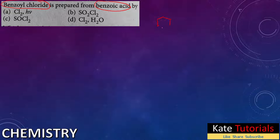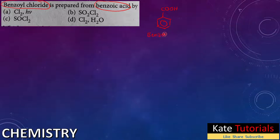This is a six-membered cyclic ring called cyclohexane. If I put a circle in it, it means resonating pi bonds are there — six pi electrons — so it becomes benzene. Now, to this benzene if I add -COOH, that is benzoic acid.